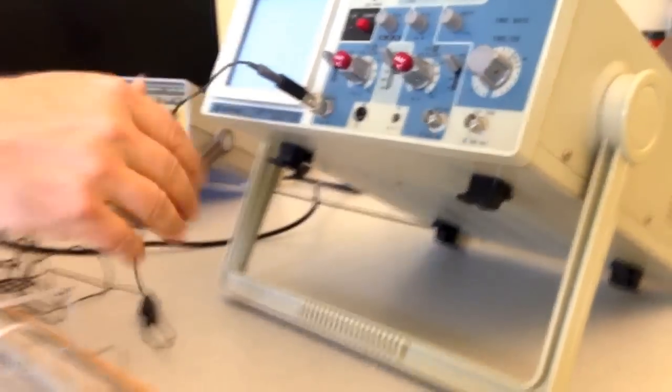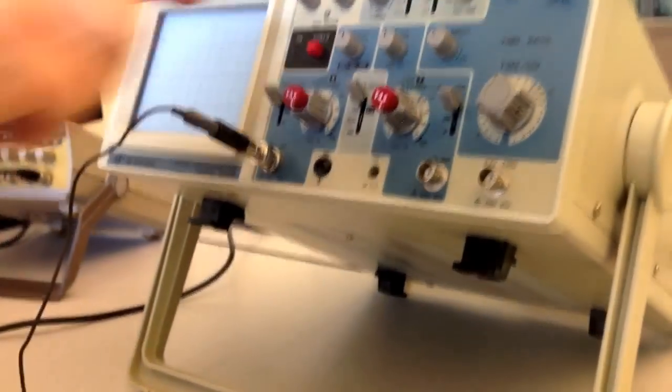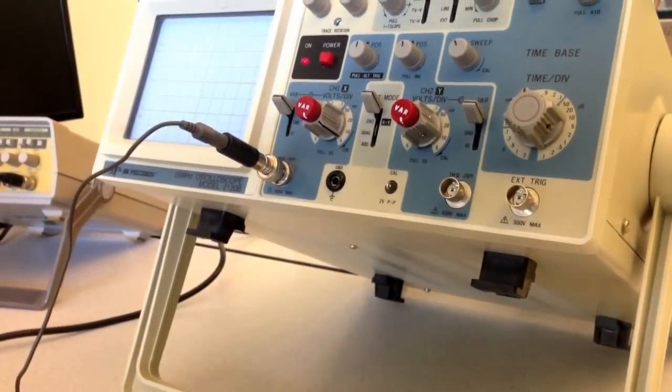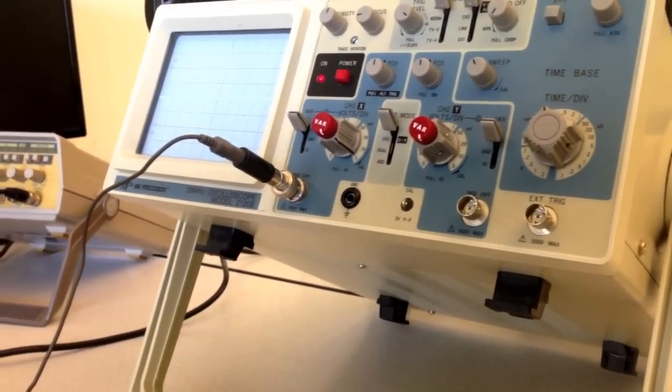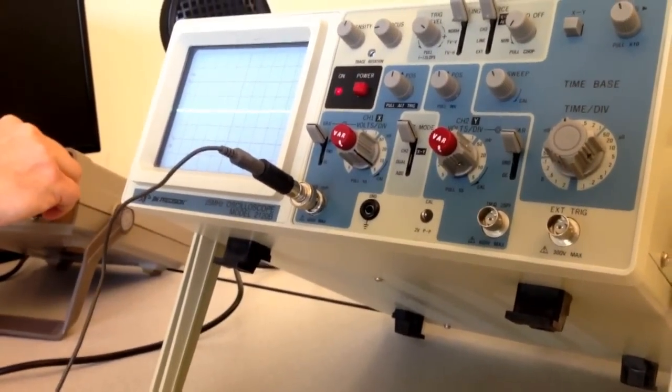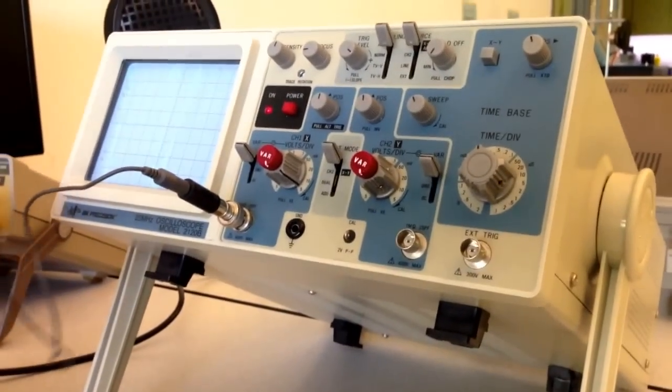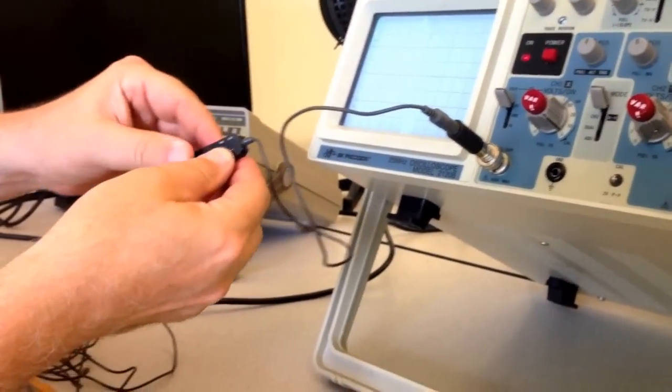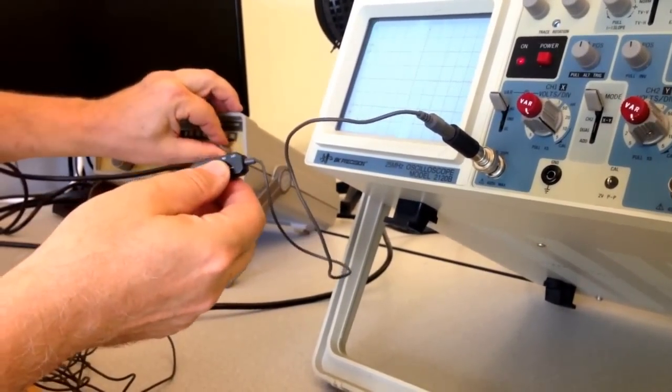We connect the cable to channel one of the oscilloscope, turn on our oscilloscope, and make sure that the microphone switch is also turned on too.